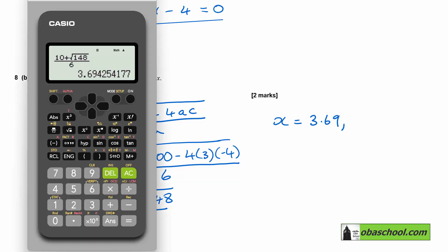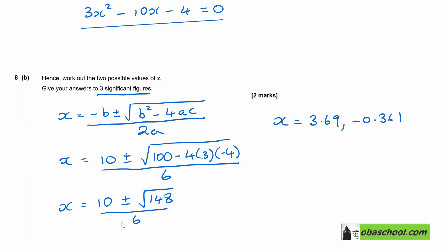And then we want the negative one, so I can just go back and edit. So I can change the plus there into a minus, and that's negative 0.361. So I can move on both of those to three significant figures.